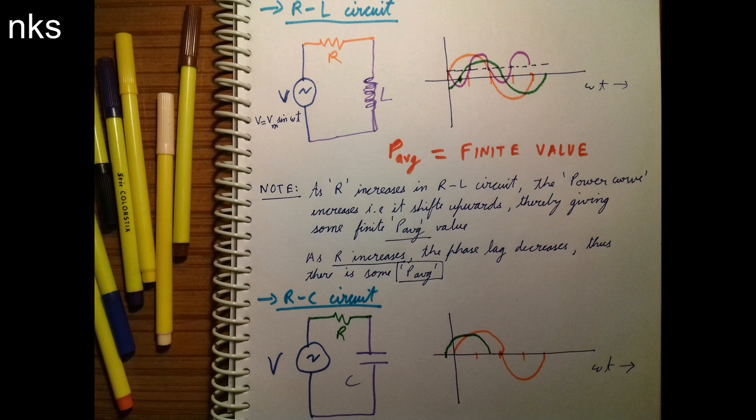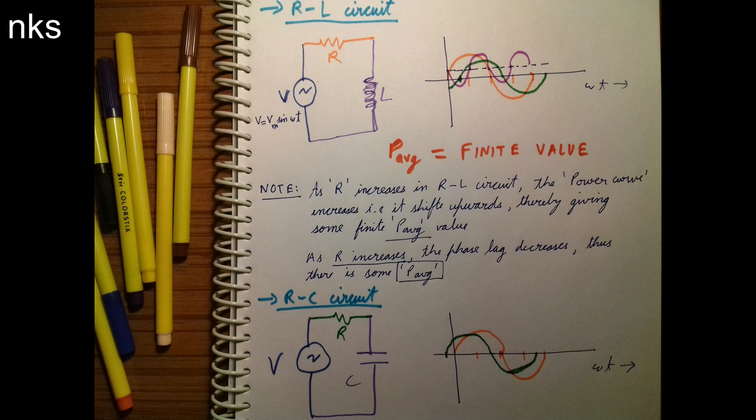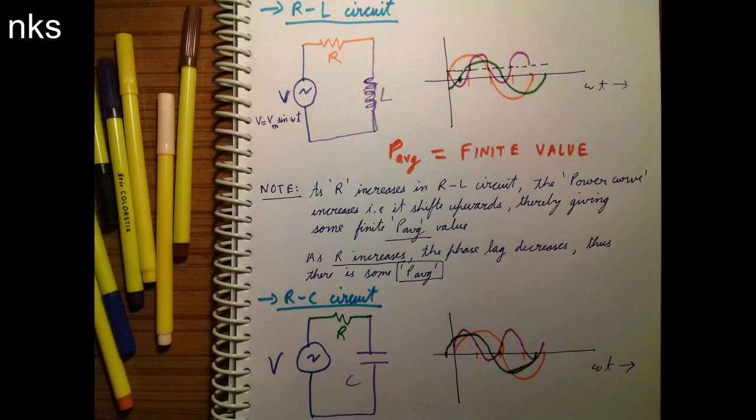Some resistance is added. This is important. So the current waveform is like this. Now the power waveform is V into I. We can see it on the screen. Now again we have got some P average, that is P average is a finite value.